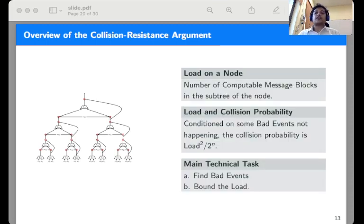In more detail, the crucial parameter of our analysis is the notion of the load of a node in the transcript. It is the number of computable messages in the transcript with queries to all the nodes in the subtree of that node. The idea is conditioned on some bad events, the collision probability can be derived in terms of load squared by 2^n. The main technical task is to find the correct bad events such that the derivation works and the load is suitably bounded.